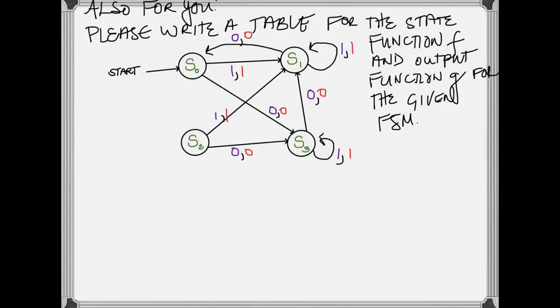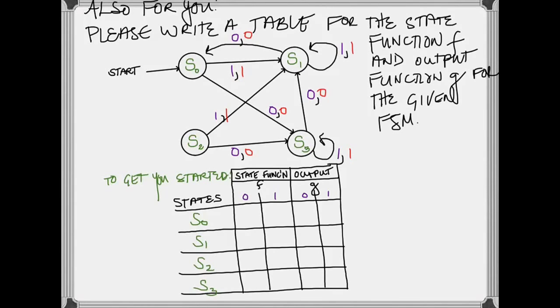But before you pause, let me get you started by giving you the table to fill in. So there are three states, S0, S1, S2, S3. There is the transition function F, where the inputs are 0s and 1s. And there's the output function G. The inputs are still 0s and 1s, and then the outputs are what happens in red, which will also be 0s and 1s. Now pause and fill in the table.